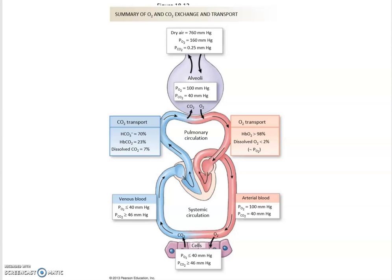Now that we're done with the chloride shift and the reverse chloride shift, there are only a couple things more that we need to discuss about the respiratory system. Here's your summary of oxygen and CO2 exchange and transport.